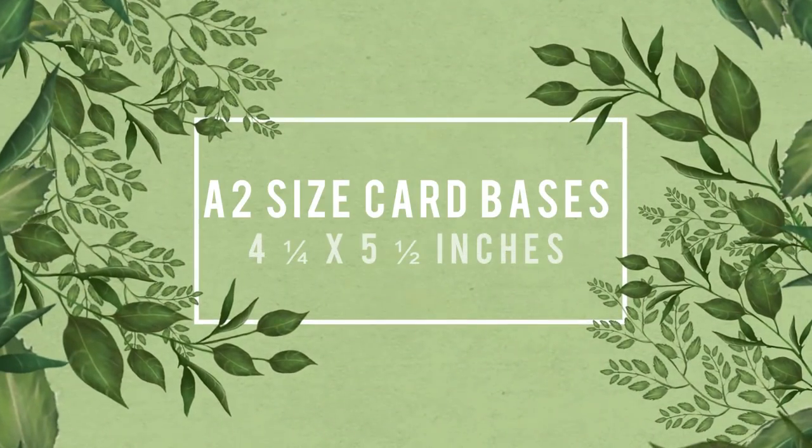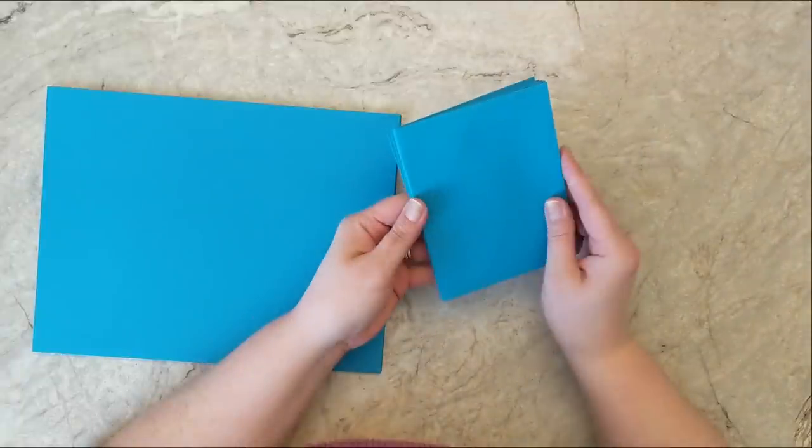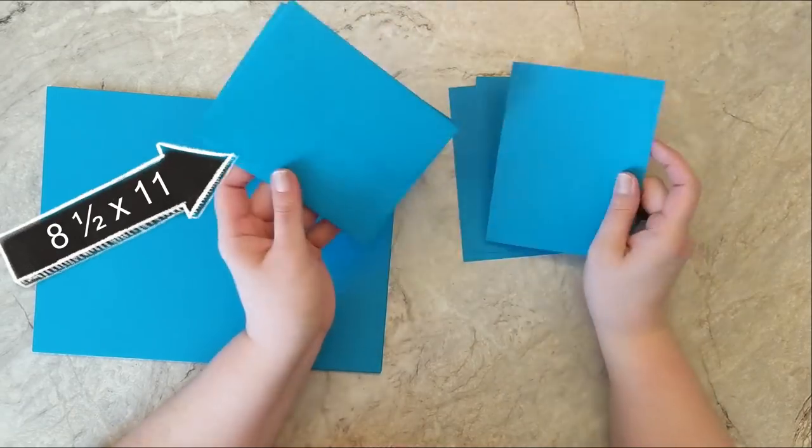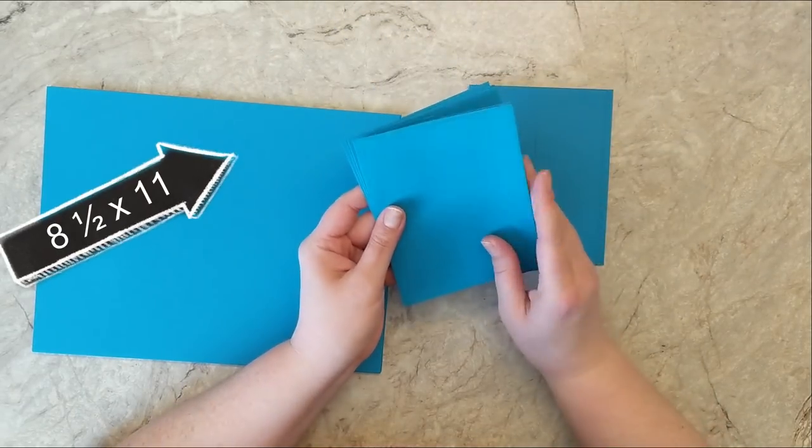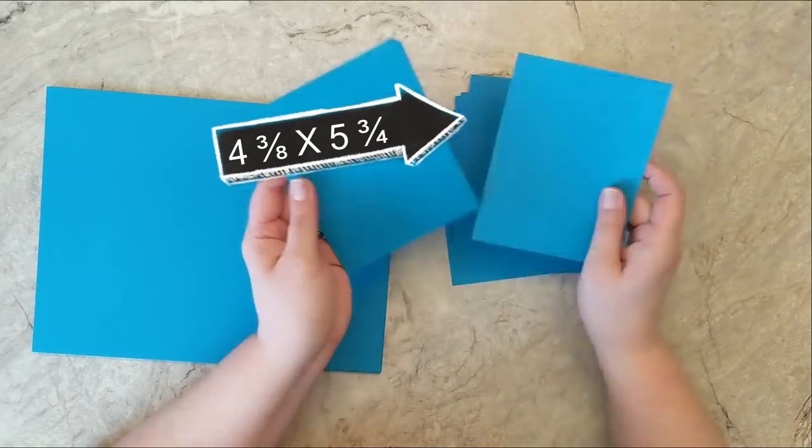These are A2 size card bases and envelopes. As a card maker, the most important tool in my arsenal is cardstock and envelopes. Here I have heavyweight cardstock and matching envelopes. These are both Gina K Designs Blue Raspberry cardstock and envelopes. The cardstock measures 8.5 inches by 11 inches and the envelopes measure 4 3/8 by 5 3/4.